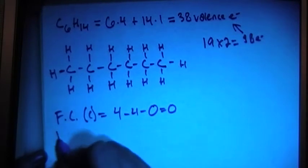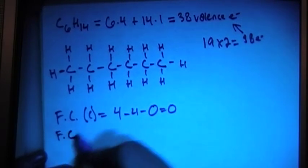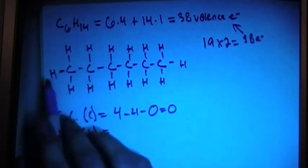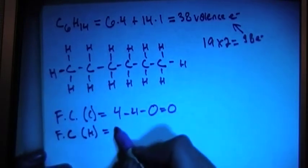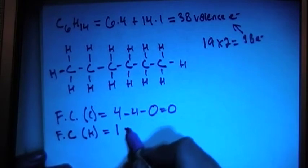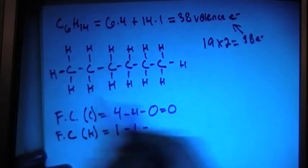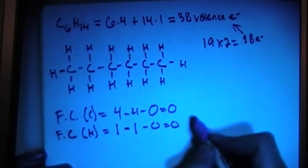Now we can check the formal charges for the hydrogens, and each hydrogen is the same setup. There's only one bond to it. So valence brought in is 1, minus number of bonds, 1, minus number of non-bonding electrons, and there's none of those. So it's going to be zero overall.